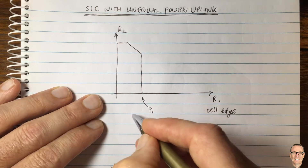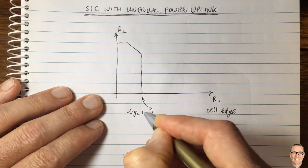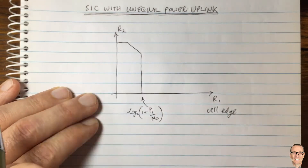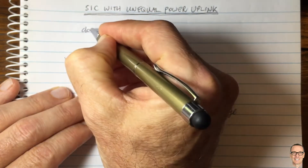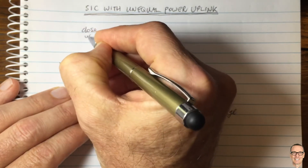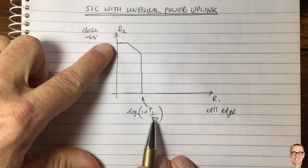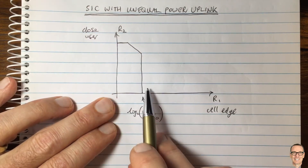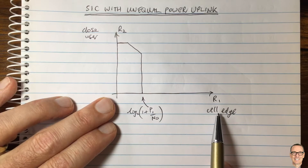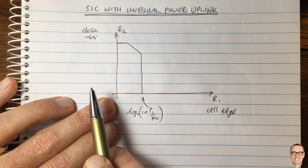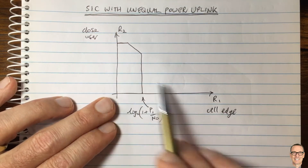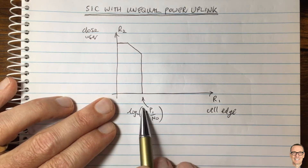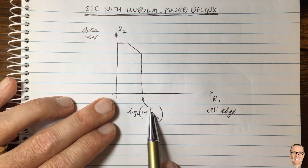The capacity here is log base 2 of 1 plus P1 over N0. User 1 is at the cell edge, while user 2 is a close user near the base station, and its capacity is the same formula but with P2. So this gives us a low rate from the cell edge user and a high rate from the close user. We're assuming they're transmitting with the same power, so by the time the cell edge user reaches the base station it has a small received power.